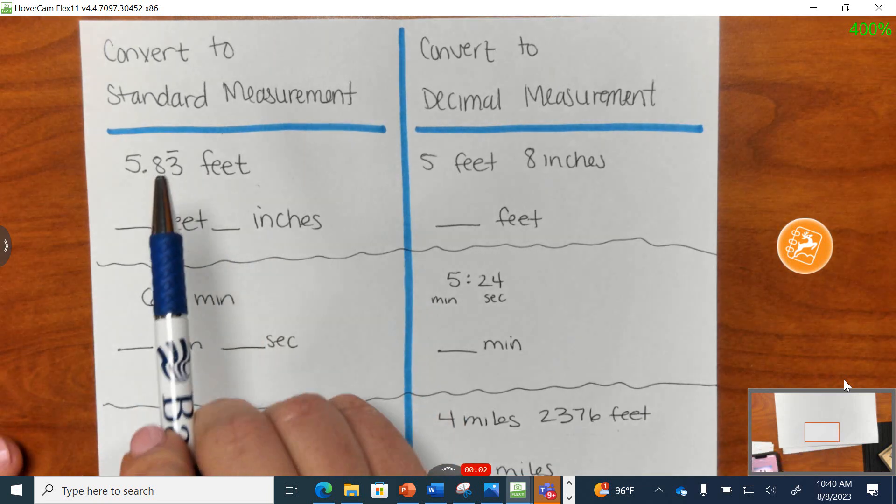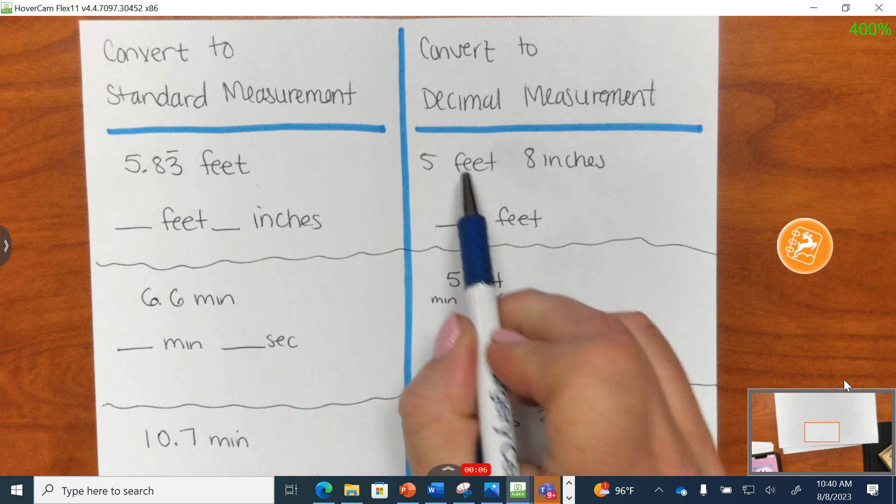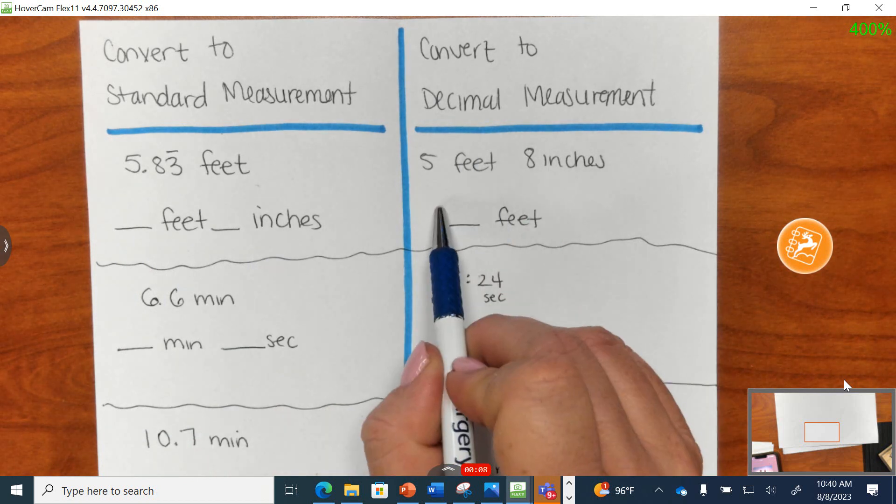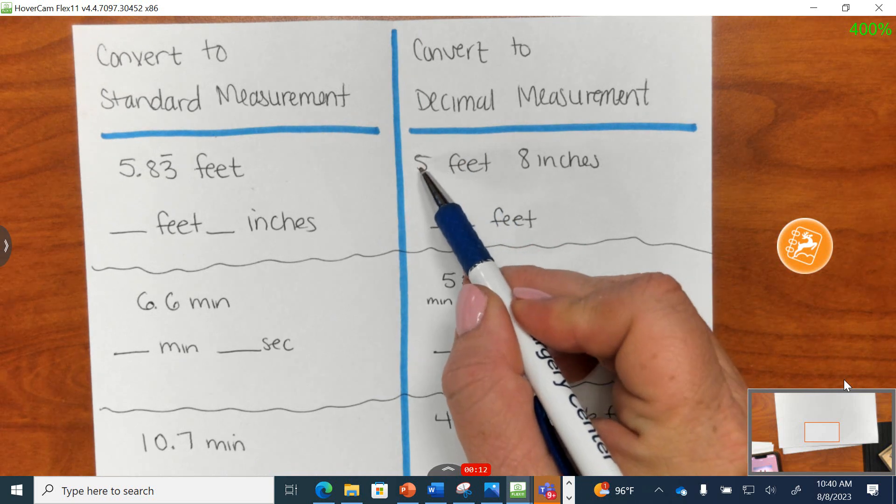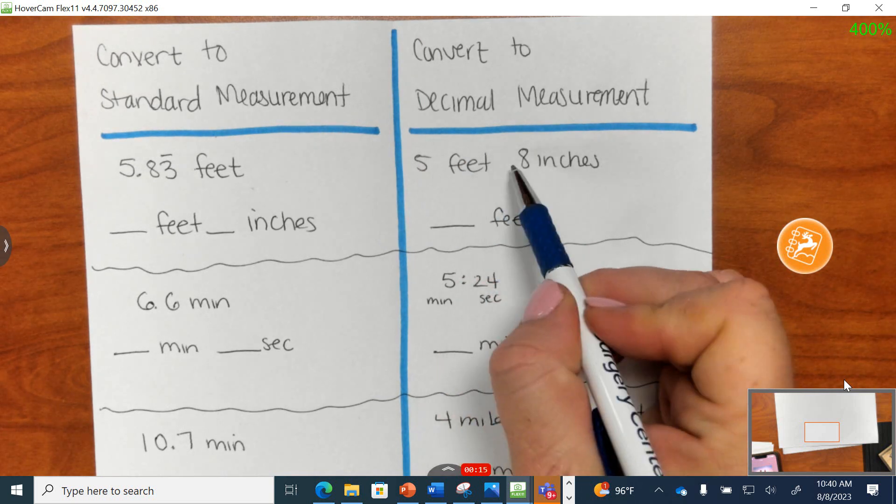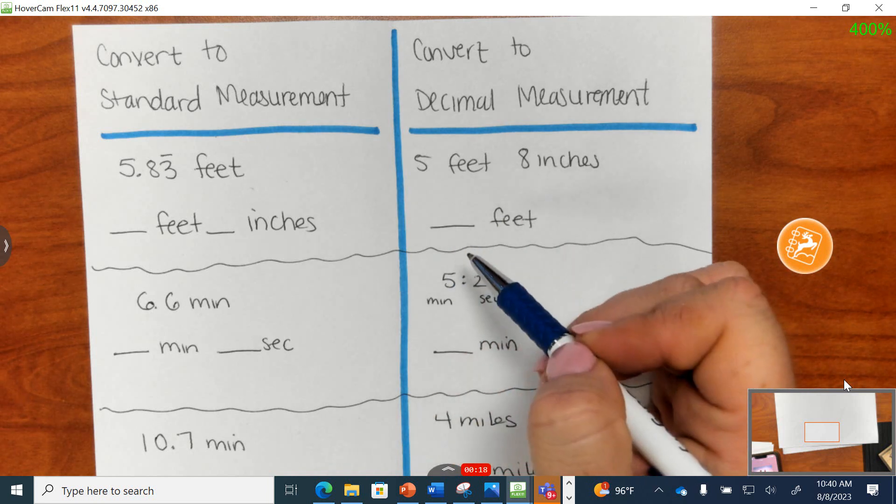In the first two problems, we're going to go from decimal form to standard measurement, and from standard measurement to decimal measurement. Let's start on the right-hand side. If we're told we have something that measures 5 feet 8 inches, we want to rewrite it in decimal form. How do we do that?